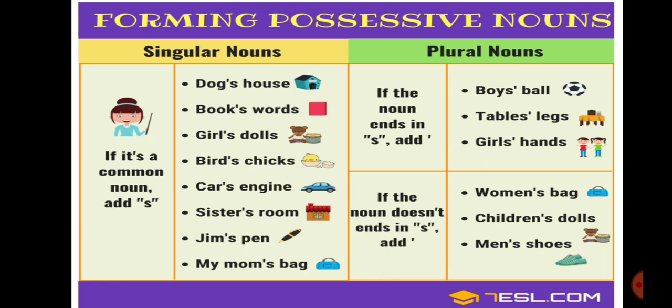Now, the formation of the possessive case — how and where we will use it. The possessive case of a singular noun is formed by adding an apostrophe and 's' to it. For example, 'dog' becomes 'dog's house,' and 'book' becomes 'book's words.' Many such examples are there.